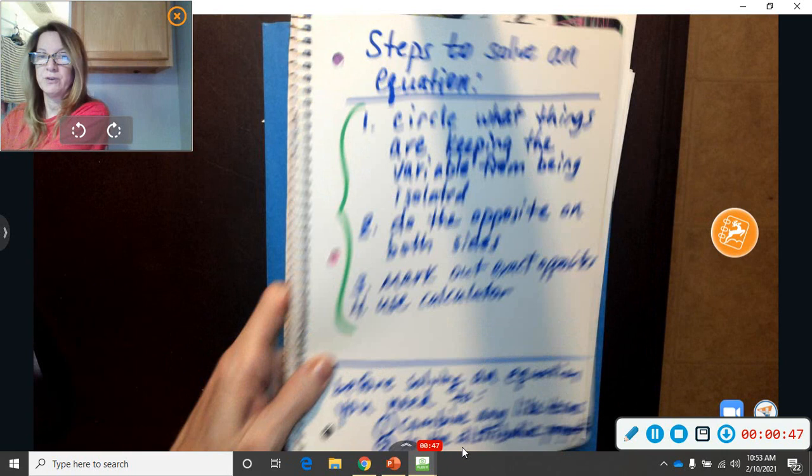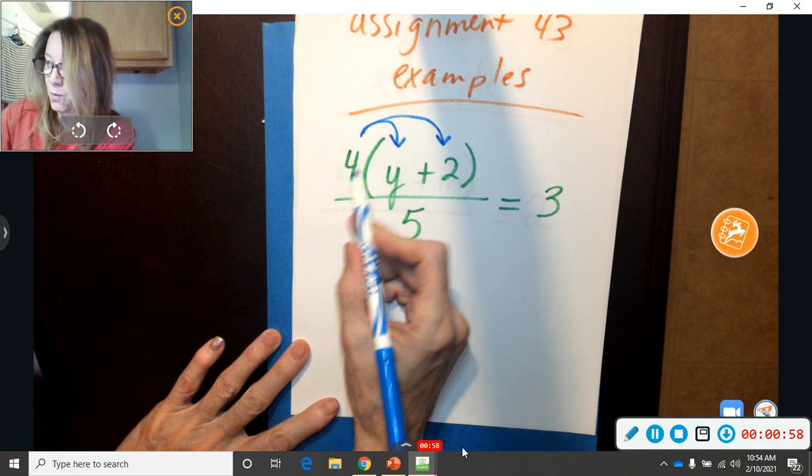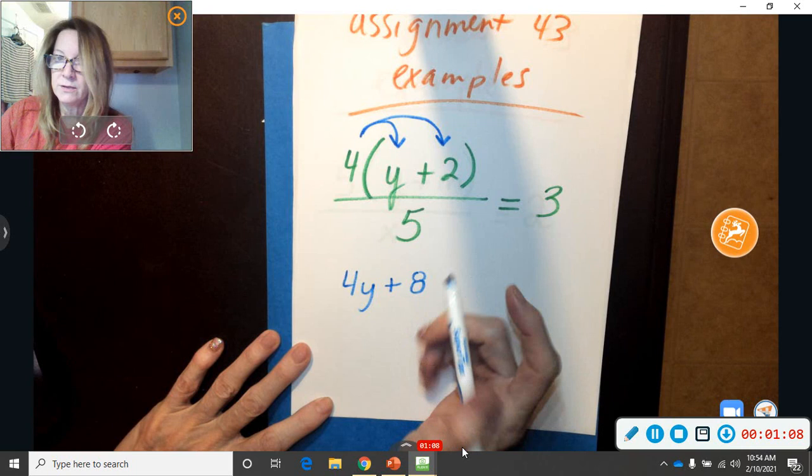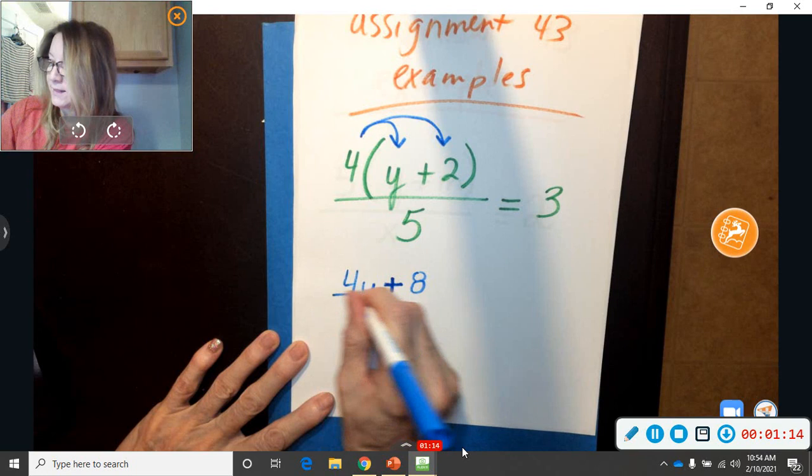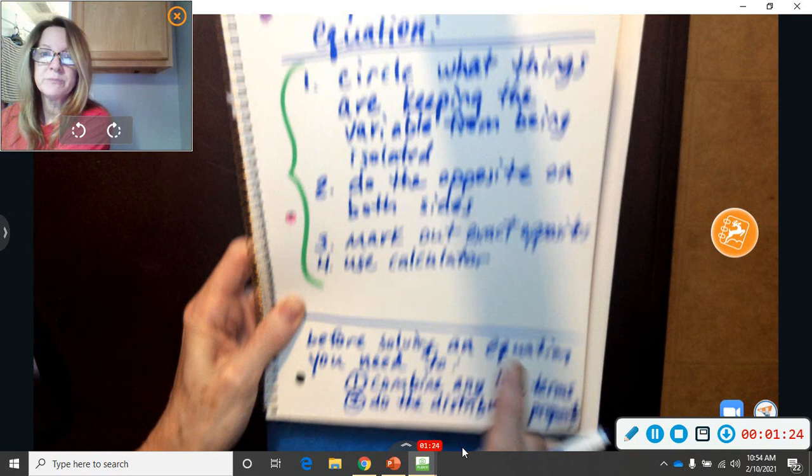So we do need to do the distributive property before we solve this equation. Let's go down to the next row and do the distributive property. 4 times y because they're squished together, so 4y. Now 4 times positive 2, it'd be a positive 8. And go ahead and leave everything else alone. We only did that one thing in this step, we just did the distributive property. So we don't have to combine any like terms. So now we're going to go ahead and solve the equation.